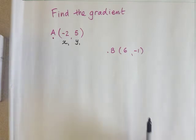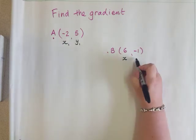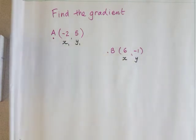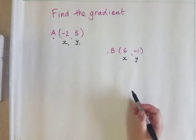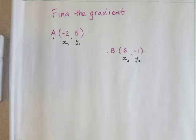The second point is this one. The x-coordinate is 6 and the y-coordinate is negative 1. And because it's the second point, I'm going to write a little 2 underneath like this.